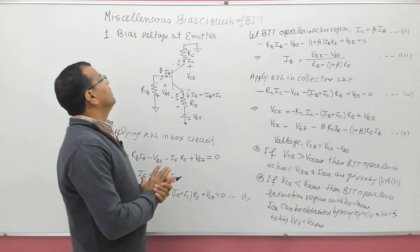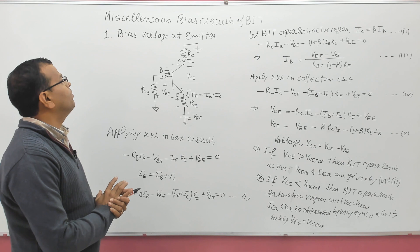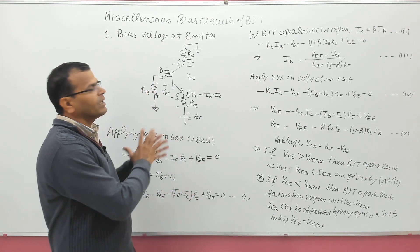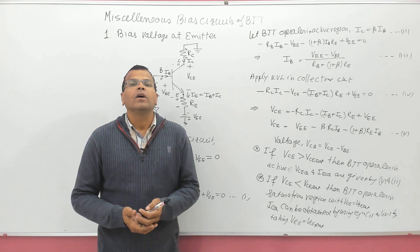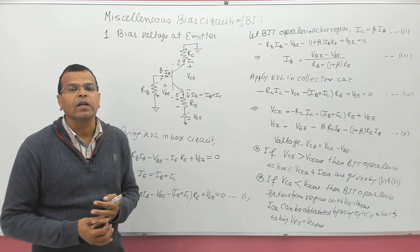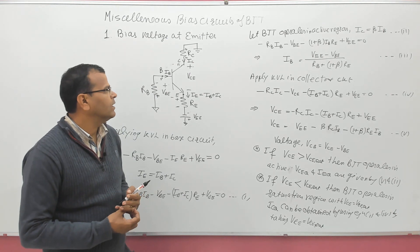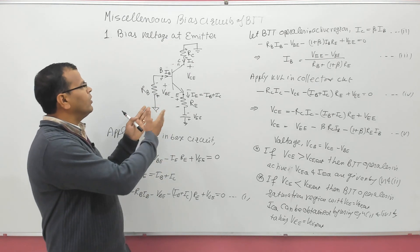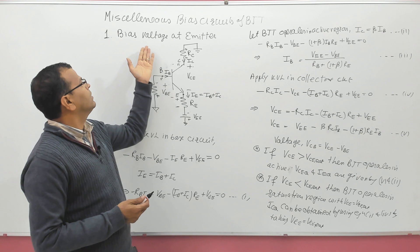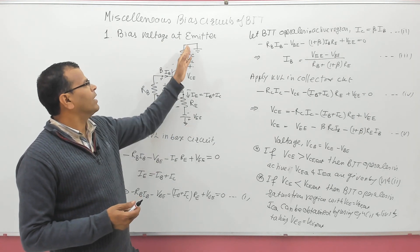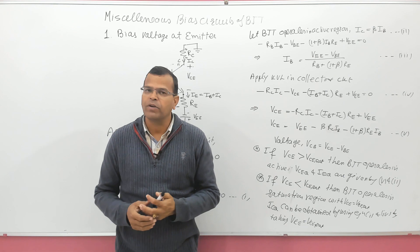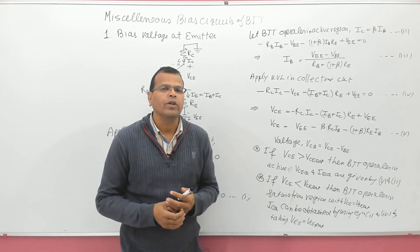This is the analysis with bias voltage at the emitter. As such, till date no question has appeared from this circuit in the exam, but you cannot avoid the possibility. There were questions on this type of analysis on PNP transistors in GATE exam earlier, and maybe in Engineering Services also. In my next video, I will be taking up bias voltage at both emitter and collector — we will see how to analyze that circuit. Thank you very much for watching.